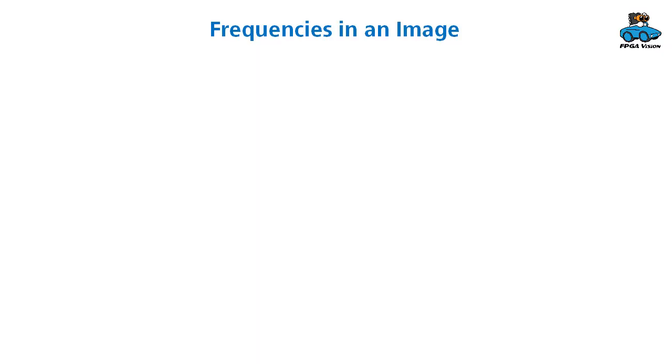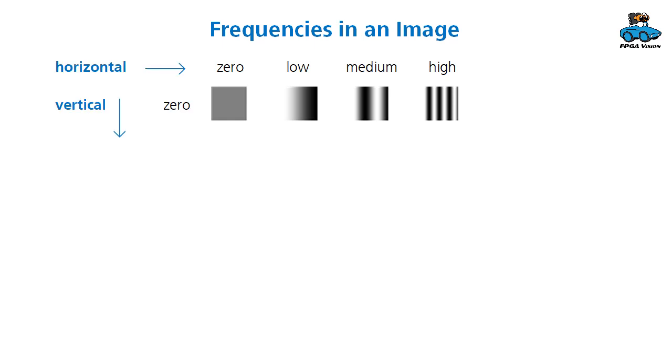To understand the algorithm we have to know what frequencies are in terms of image processing. Frequencies mean that we have a certain amount of structures in our image and frequency of zero would be an image without a structure. If we have a gradual change, this is a low frequency. If we have more frequent changes, this means medium and high frequency. These frequencies can occur in horizontal or in vertical direction.